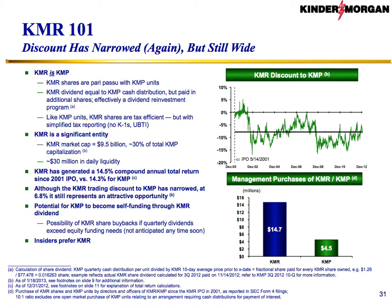KMR is equivalent to KMP. It just pays its distributions in additional shares. It was designed that way to be attractive to institutions who tend not to own MLP equity, at least not in large amounts, because of some negative consequences that come along with that ownership. So we designed KMR to make it easier for institutions to own MLP equity.